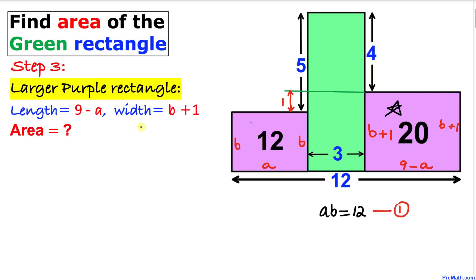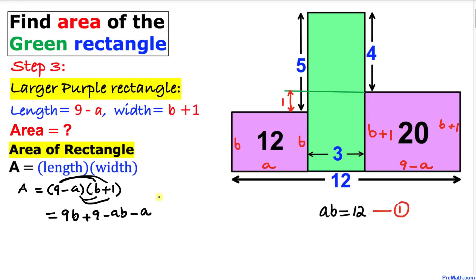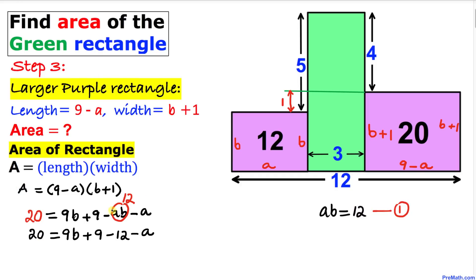Now let's focus on the larger purple rectangle and find its area in terms of a and b. Area equals length times width, so area equals (9 minus a) times (b plus 1). Expanding using the FOIL method gives us 9b plus 9 minus ab minus a. Since the area is 20, we replace the area with 20, and from Equation 1 we know ab equals 12, so we substitute that as well.